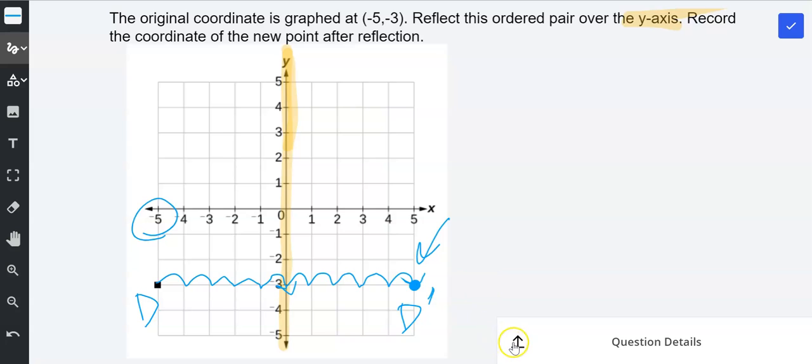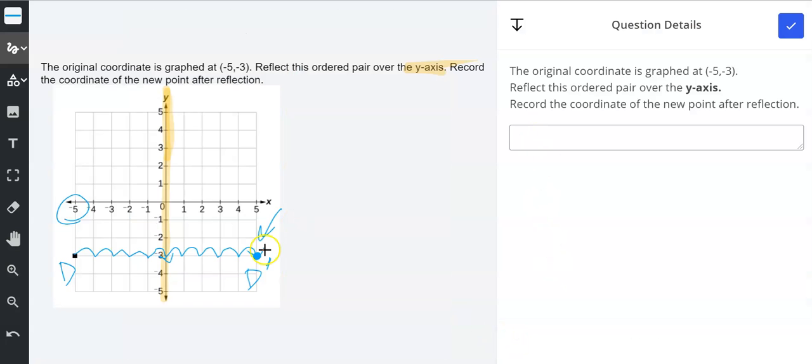Then I'm going to go up to where I need to type in my answer. And the new point is at 5, negative 3. So the new point we created is 5, negative 3, and we created it by flipping this point d over the y-axis.